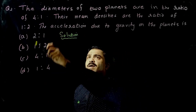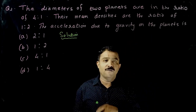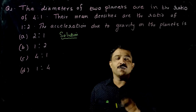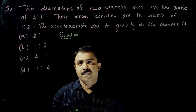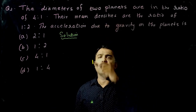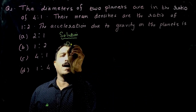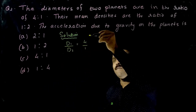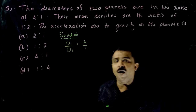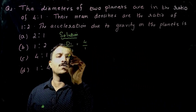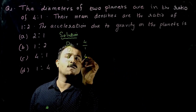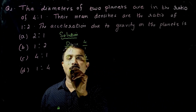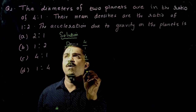Question 2: The diameters of two planets are in the ratio 4:1 and their mean densities are in the ratio 1:2. So d1/d2 = 4/1, which means r1/r2 = 4/1, and ρ1/ρ2 = 1/2. We have to find the ratio of acceleration due to gravity of the two planets.